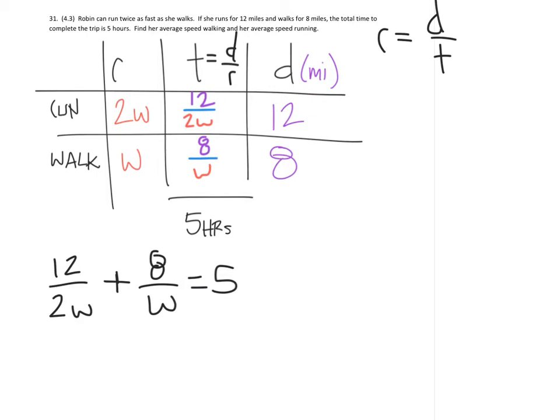So if we look at this first term, it has a 2 and a W. The second term has a W but not a 2. So if we multiply both of those by 2, then we have a common denominator of 2W.